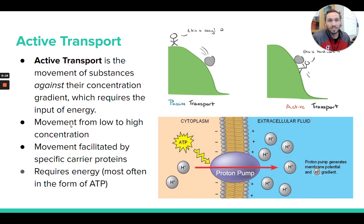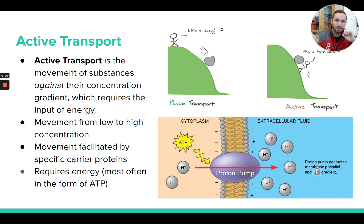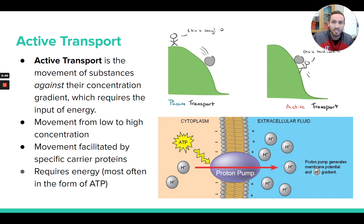So active transport — we're still talking about the movement of substances across the cell membrane into and out of the cell, just like in passive transport. But the big difference here is that this requires energy. So now we're talking about the movement of molecules across the cell membrane in a way that demands energy, and usually that energy is going to come from ATP being made inside the cell.